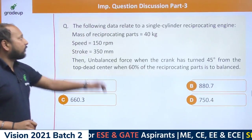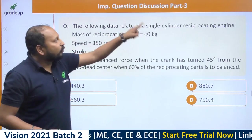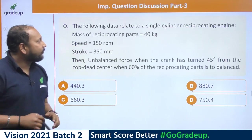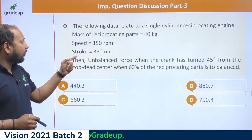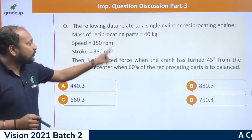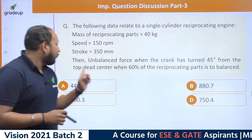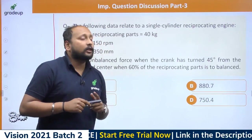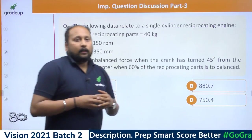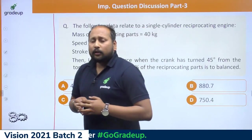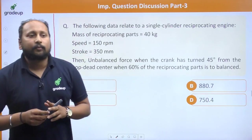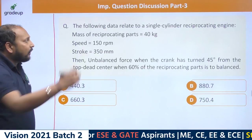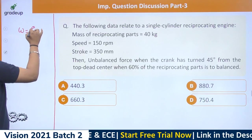Let us understand the first question. The following data is related to a single cylinder reciprocating engine: mass of reciprocating parts is 40 kg, speed is 150 rpm, stroke is 350 mm. Find the unbalanced force when the crank has turned 45 degrees from top dead center when 60 percent of the reciprocating part is to be balanced. This is a question from the unbalance topic in Theory of Machines — solve it quickly.